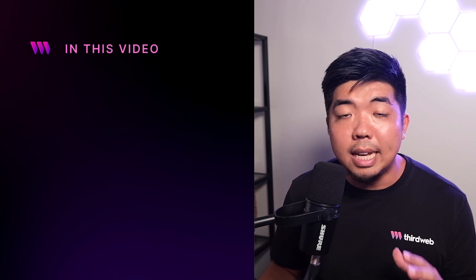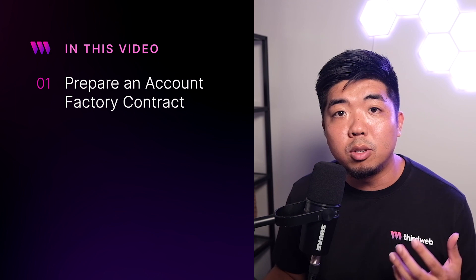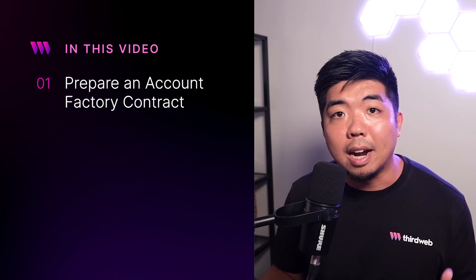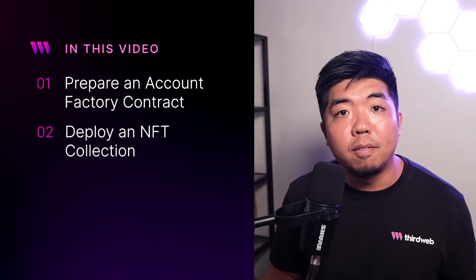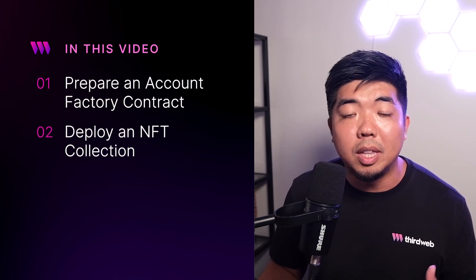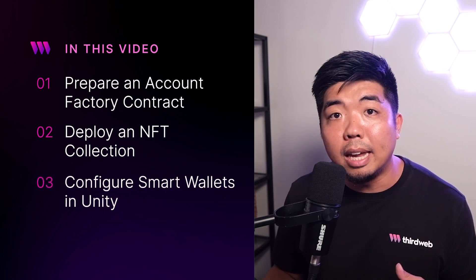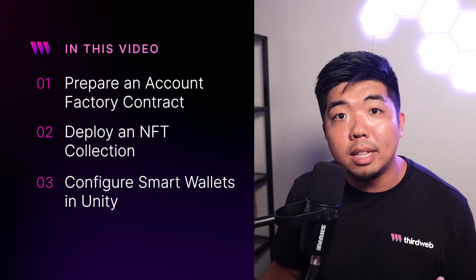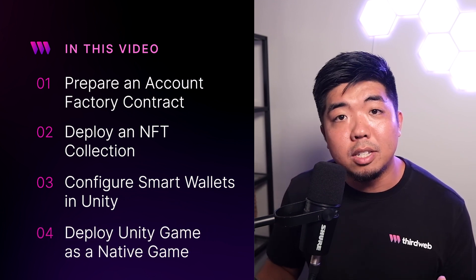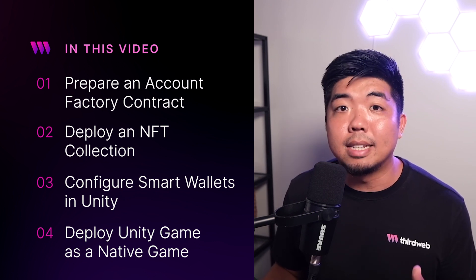An overview of what we're going to be covering in this video: we're first going to prepare a few things that we need to set up smart wallets for our Unity game, like an account factory contract. We'll also deploy our very own NFT collection as a test collection to claim within our game. We'll then jump into Unity, set up our Unity game, configure our smart wallets, and then deploy our Unity game as a native game to our desktop and test it out. With all of that said, let's jump on our computer and get started.